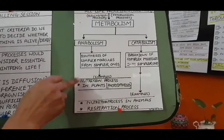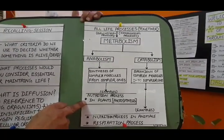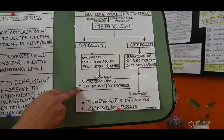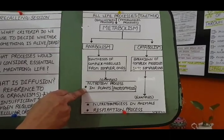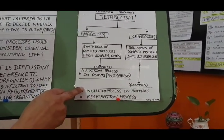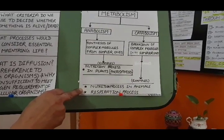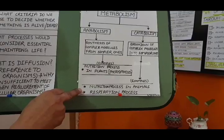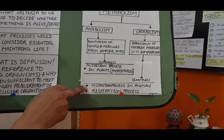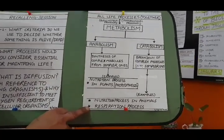For example, in anabolic life processes, we can consider nutrition in plants — photosynthesis — in which plants take carbon dioxide and water, which are simpler molecules, and convert them into starch or glucose. On the other side, in catabolic life processes, we consider nutrition in animals, where complex food substances are taken in and broken down into simpler ones. The respiration process can also be considered a catabolic reaction.